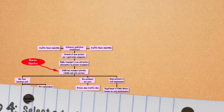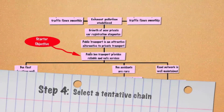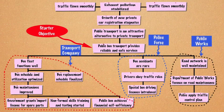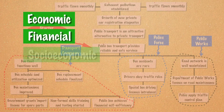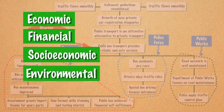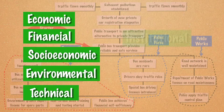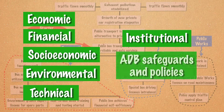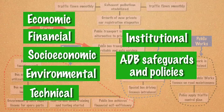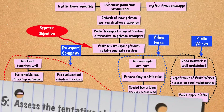Step 4: Select a tentative chain. Prepare a set of criteria to compare each results chain. Criteria may include economic, financial, socioeconomic, environmental, technical, and other institutional ones. Include also ADB safeguards and other applicable policies. Compare each results chain to arrive at a tentative chain.